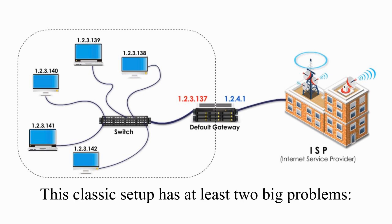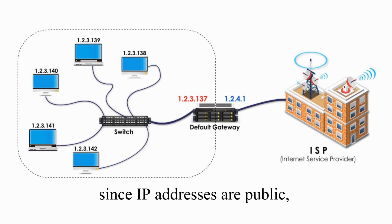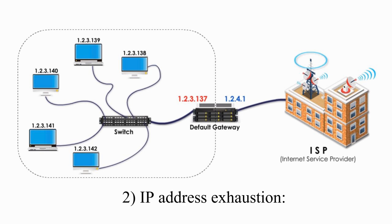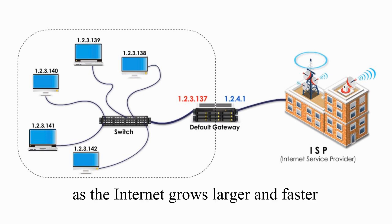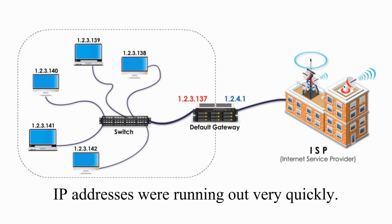This classic setup has at least two big problems. One, security vulnerability — since IP addresses are public, everyone can access this so-called private network. Two, IP address exhaustion. As the Internet grew larger and faster than anyone ever could imagine, IP addresses were running out very quickly.